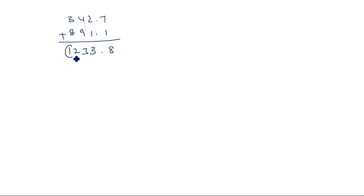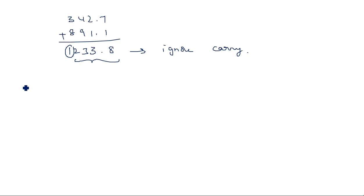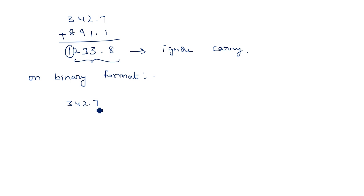In tens complement, the carry is ignored. So ignoring the carry from 12339.8 gives the answer 2339.8. Now let us perform the same operation in binary format.